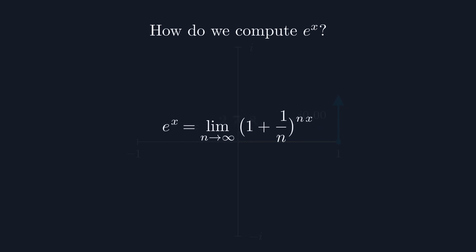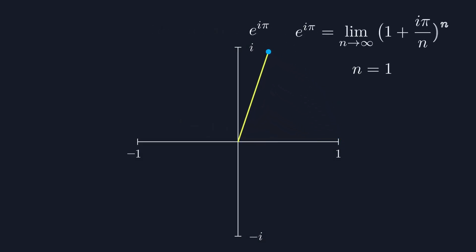Now, by doing some rearranging, we can get a formula for e to the x, and we can substitute in i theta to get our equation. You can see here that we're substituting in an angle of pi and seeing what happens as we approach our limit. The result approaches negative 1.